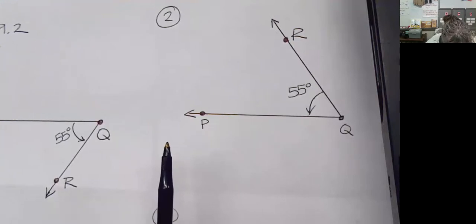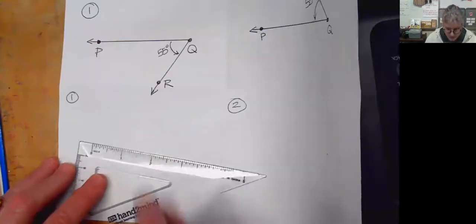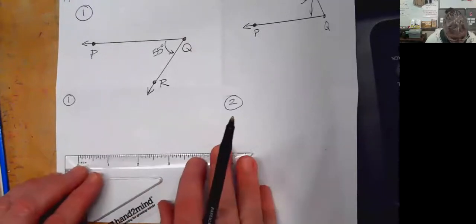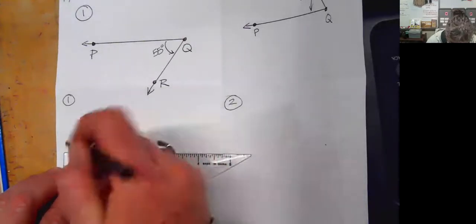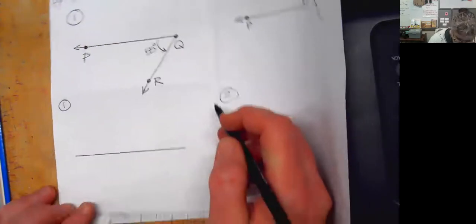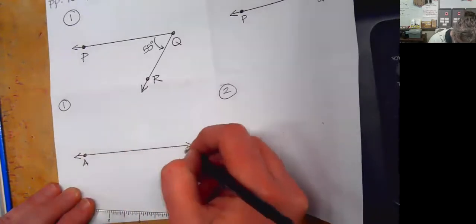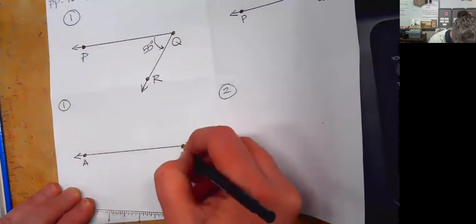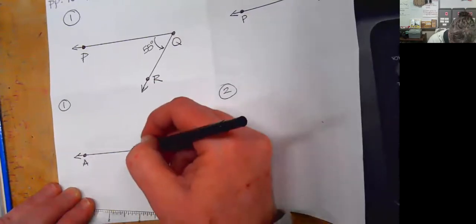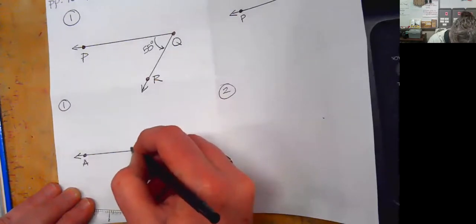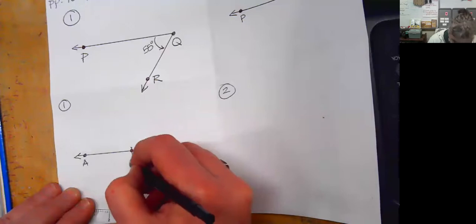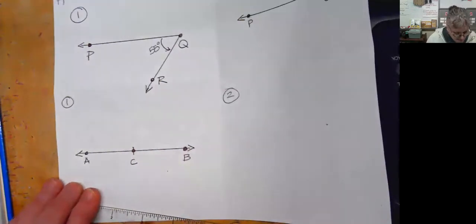Now, on a copy of these line segments, use a protractor to draw angles. On number one, I'm going to use my drawing triangle and come out a little farther so you can see. I'm drawing exactly what's in the book — just a line. This is A, this is B, and this right here in the middle is C, with a little line through it and a dot — a point.